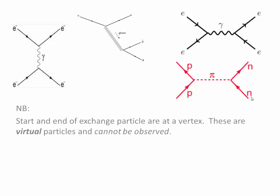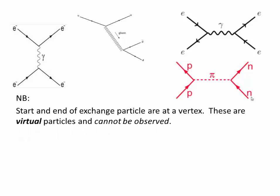Here we have some Feynman diagrams. Remember the start and end of the exchange particle are at a vertex - the points where they meet. These are virtual particles and they cannot be observed. The force carriers cannot be observed because they are created and absorbed by the particles.